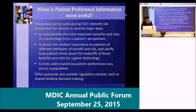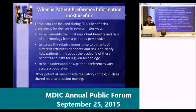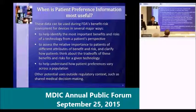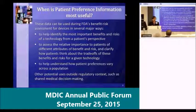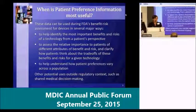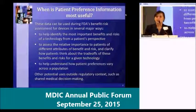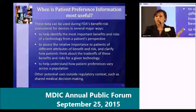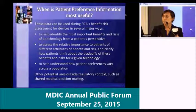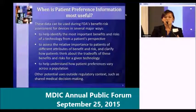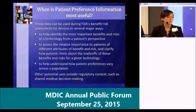From FDA's perspective, we think that patient preference information can play a couple of key roles. One is to help identify which benefits and risks are most important from the patient perspective. When designing a clinical trial, you'll start with a laundry list of things that you're looking at. And we have perspectives from a variety of clinical perspectives and other disciplines on what should be the most important thing to measure.